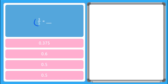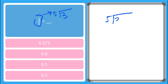So here I have my fraction 3 fifths, or 3 over 5, that I need to convert to a decimal. To do that, I need to remember that a fraction just means division, where I take my denominator and I divide it into my numerator. And now I can see that 5 goes into 3 — that's a little tricky because 3 is smaller than 5, so I need to rely on my knowledge of dividing with decimals.